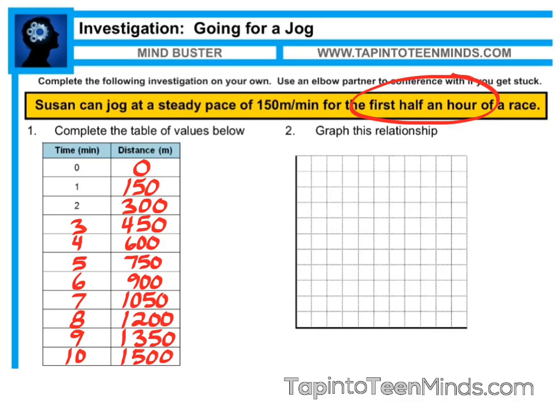Now that our axes are labeled, we need to find a scale that would be appropriate. If we count how many boxes or how many units we have, you'll note that there are 10 units total on this graph. Since we're dealing with 10 minutes from our table, we can go up by 1 on the x-axis. Our distance would likely be 150.